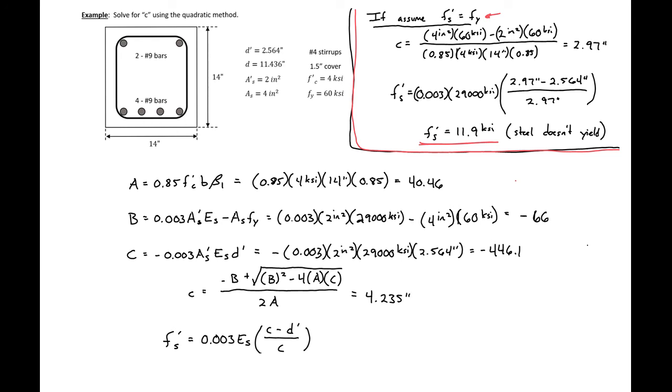We can then plug this into our expression to find our stress in the compression steel, so 0.003 times 29,000 times 4.235 minus 2.564, the depth of our compression steel divided by C 4.235. And we'll find our FS prime to be 34.3 KSI.